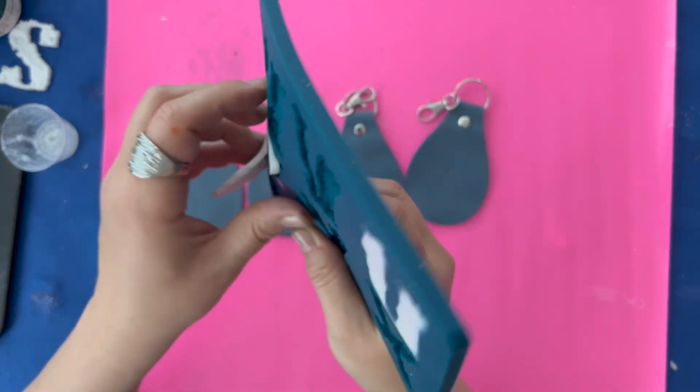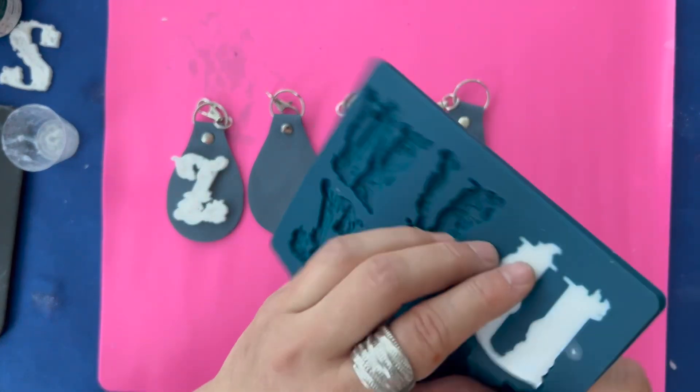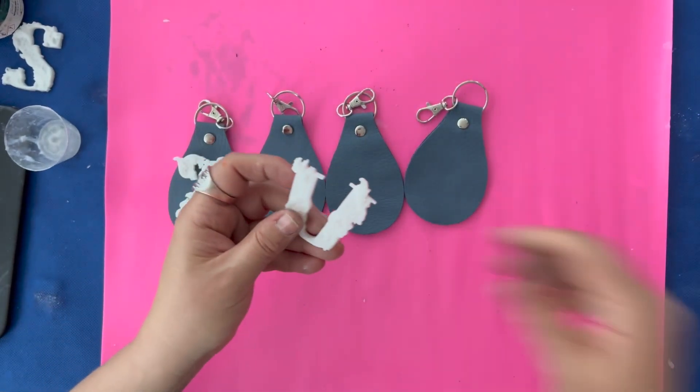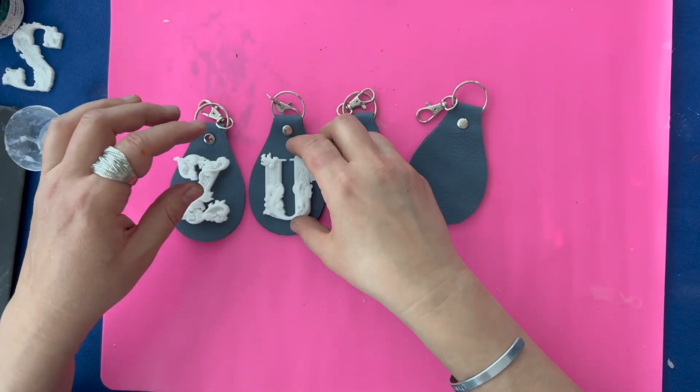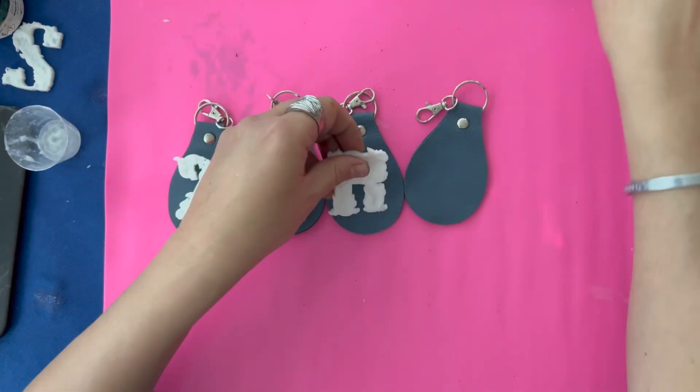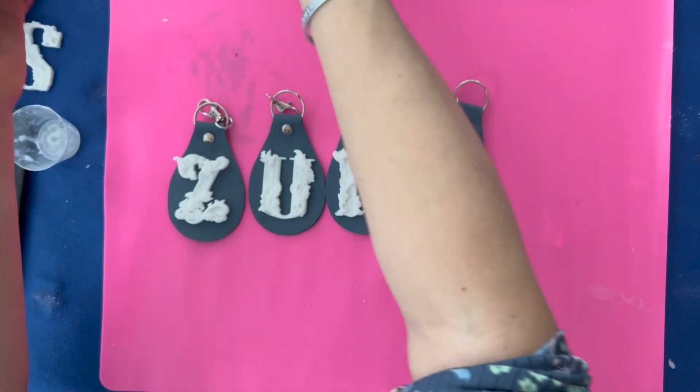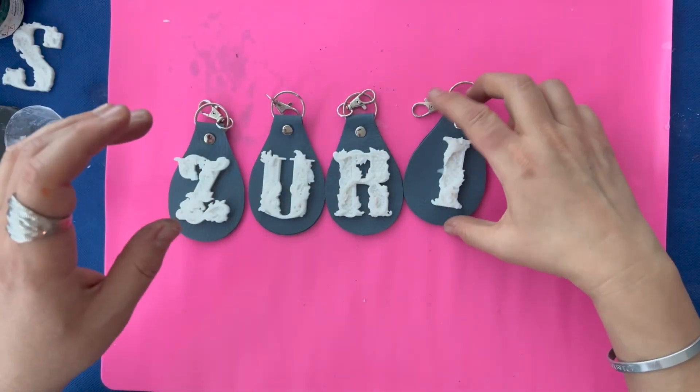And now I'm demolding my letters, starting out with the letter Z. Moving on to U. Next we have letter R. And finally, my I to spell out Zuri.